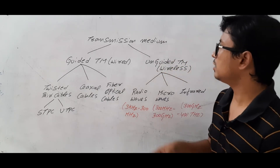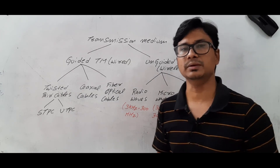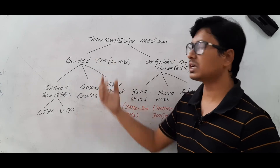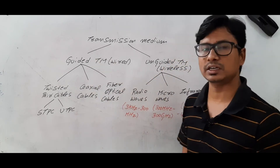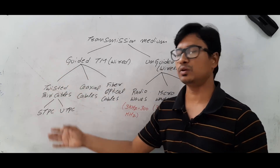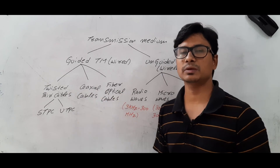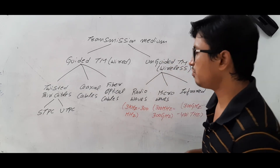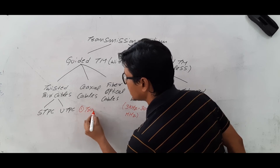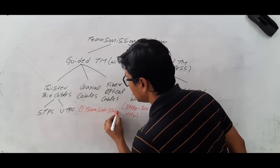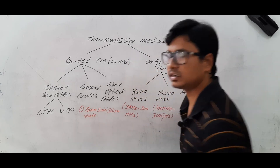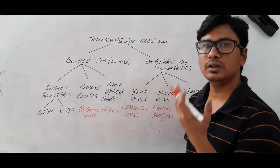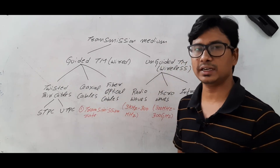You might ask: where and how should I select the transmission medium? If I want to transfer data between two devices, should I choose guided or unguided? If guided, should I go for twisted pair, coaxial, or fiber optical cables? The factors that guide this choice include: first, transmission rate — how fast the data should be transferred from source to destination. Based on the transfer rate, you select guided or unguided and which specific type.